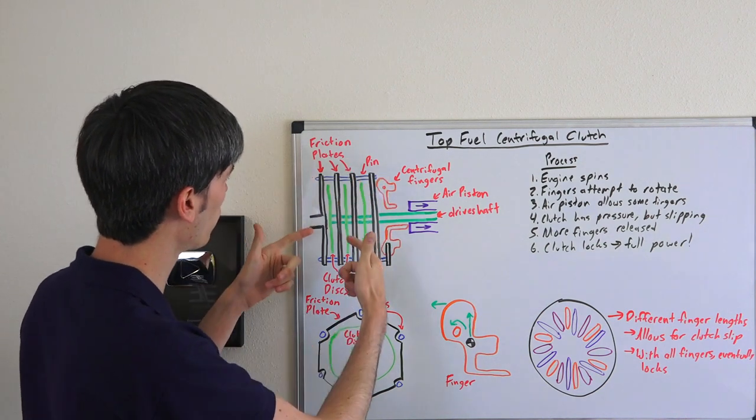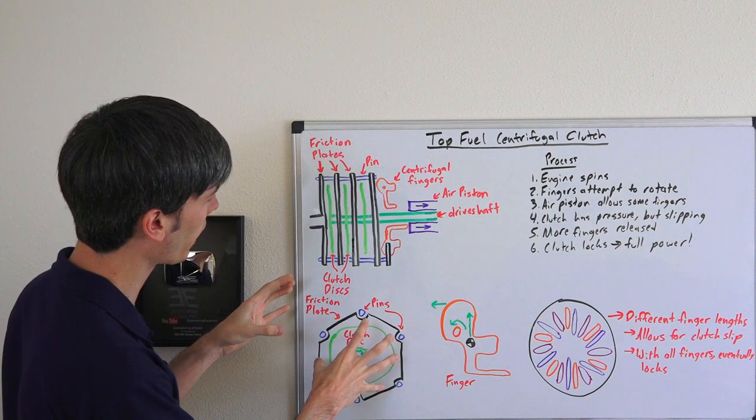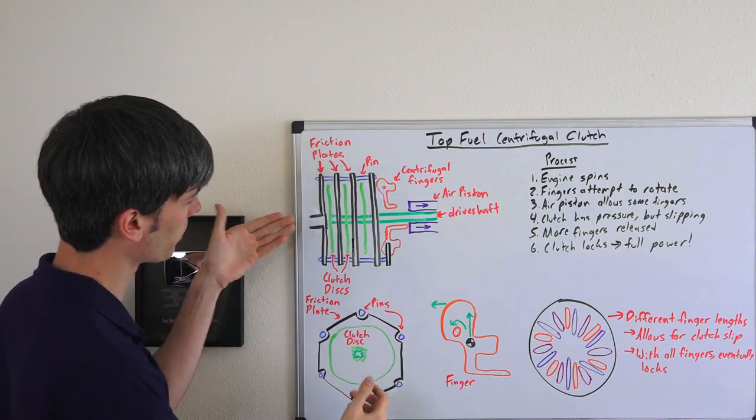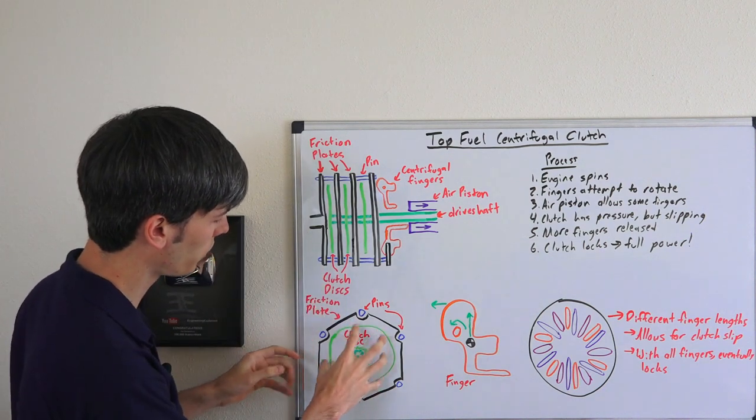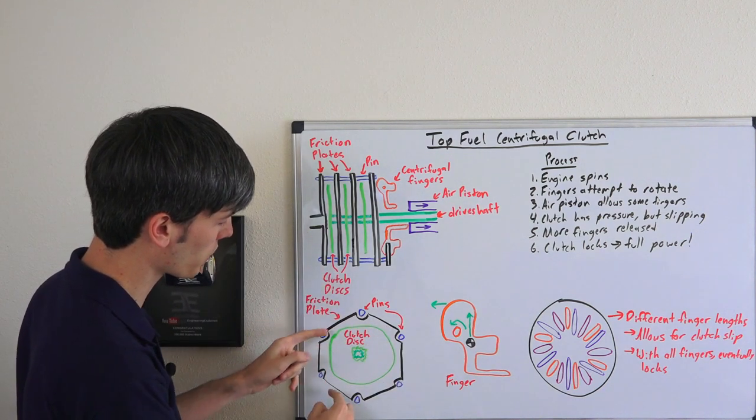If you're looking down at it, basically if you're looking from the side here where this is the crankshaft coming in, then you will see these pins will rotate the friction plates but they will not rotate the clutch disc.